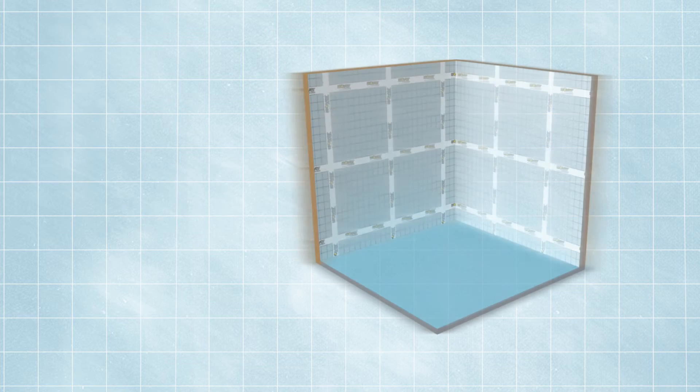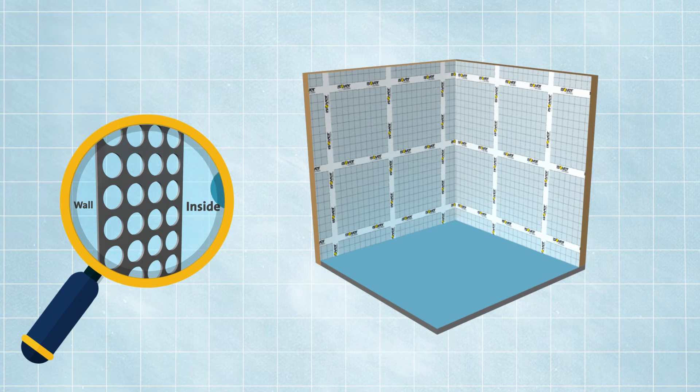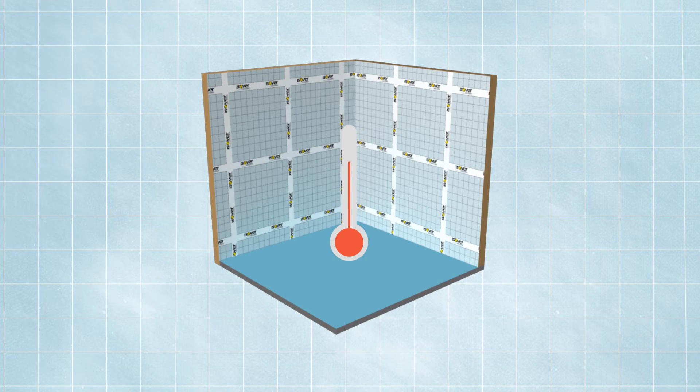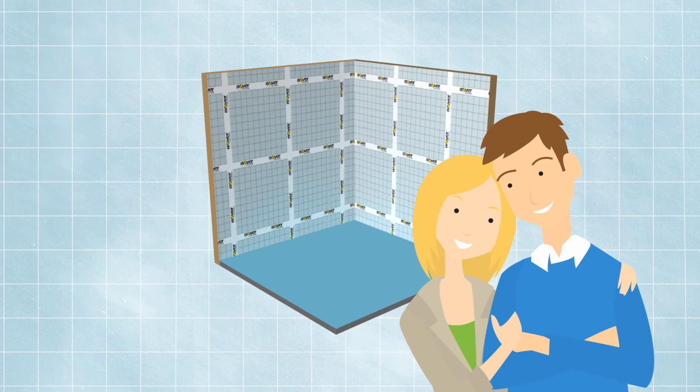The ISOVA Vario membrane and special tape create air tightness whilst allowing the wall to breathe. This improves the thermal performance whilst also improving occupants' comfort through reducing draughts and air leakages.